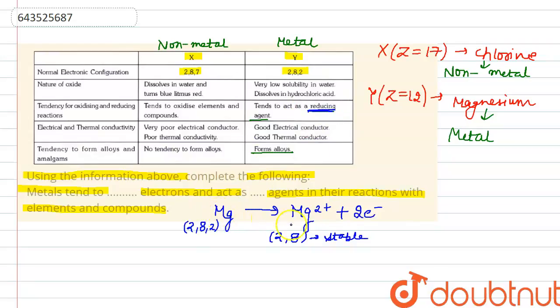As metals tend to donate electrons, so obviously they are undergoing oxidation. Oxidation over here we can see that magnesium is undergoing oxidation. The one which undergoes oxidation itself will act as a reducing agent.